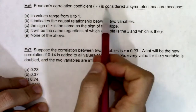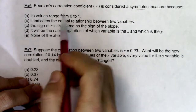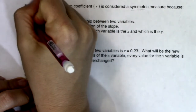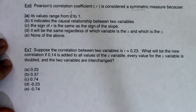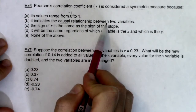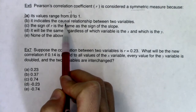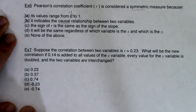Is R symmetric because its values range from 0 to 1? That can't be right because the values don't range from 0 to 1 — they range from negative 1 to 1. That's an inherently false statement. Is it symmetric because it indicates a causal relationship between two variables? Correlation is not causation. Causation can only be determined in an experiment. So that's not a true statement either.